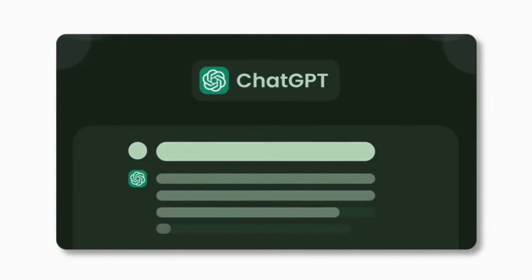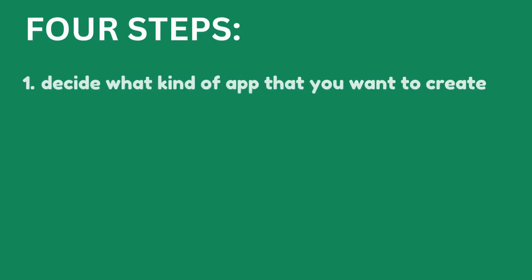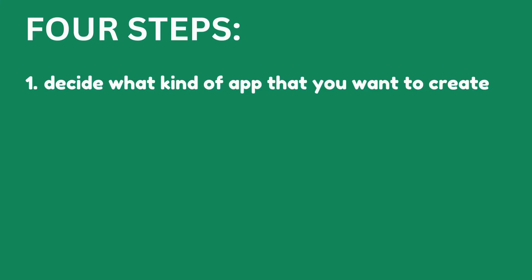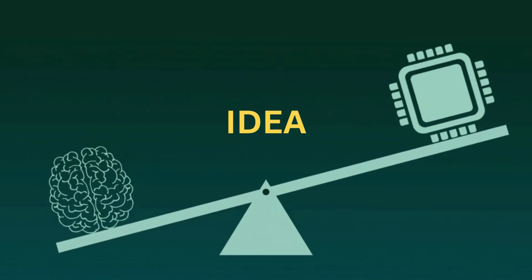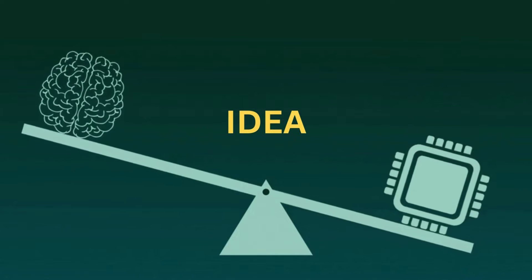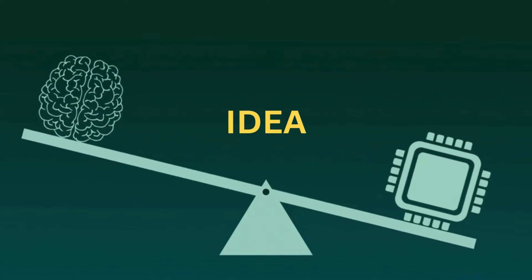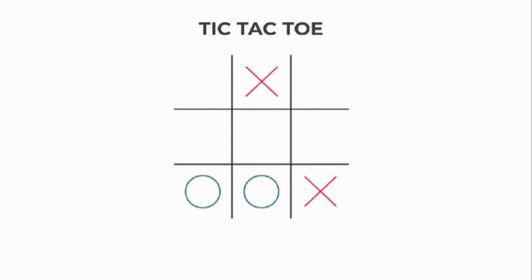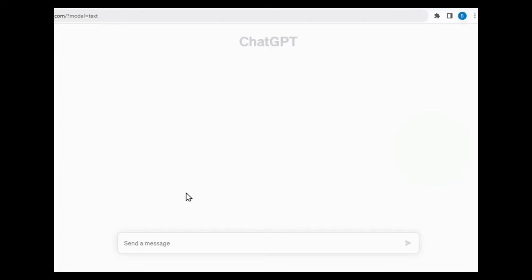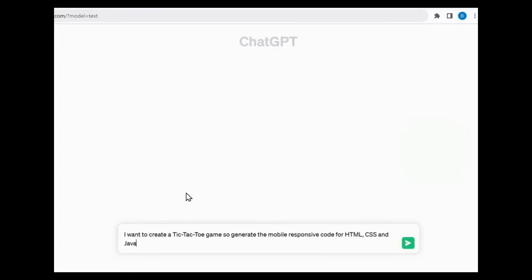To make an app using ChatGPT, we are going to do 4 steps. First, decide what kind of app you want to create. If you have an idea for an app, you can tell ChatGPT about it and how it should work. But for the purpose of this video, we are going to make a small game app like tic-tac-toe. So let's go to ChatGPT and ask it to give me an HTML, CSS, and JavaScript code for a two-player tic-tac-toe game.